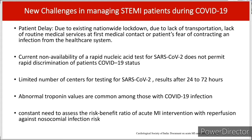We will see one by one what those challenges are. First is patient delay — often due to existing nationwide lockdown, lack of transportation, lack of routine medical services at first medical contact, or patient phobia of contracting infection from the healthcare system. Secondly, there is a shortage of centers performing COVID tests, so COVID status is most of the time unknown when the patient arrives in the emergency room. Additionally, troponin values are almost always high in COVID-19 infection and also high in myocardial infarction or myocarditis, adding to the confusion. There is a constant need to assess the risk-benefit ratio of acute MI intervention with reperfusion against nosocomial infection risk.